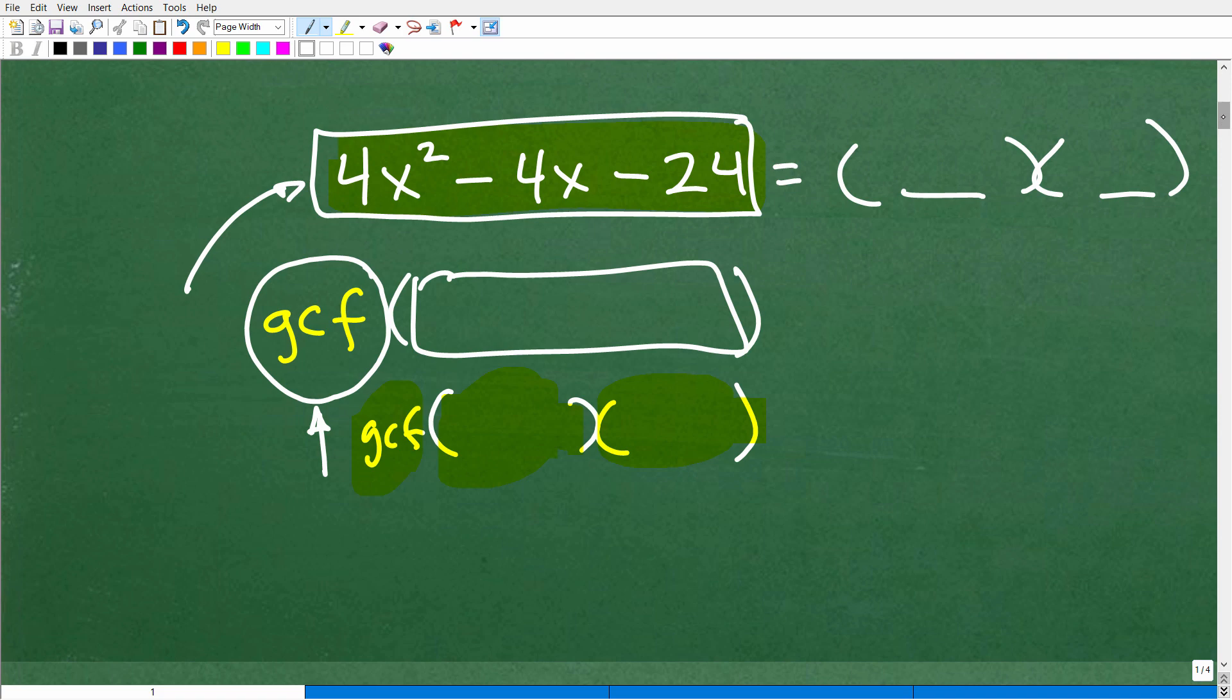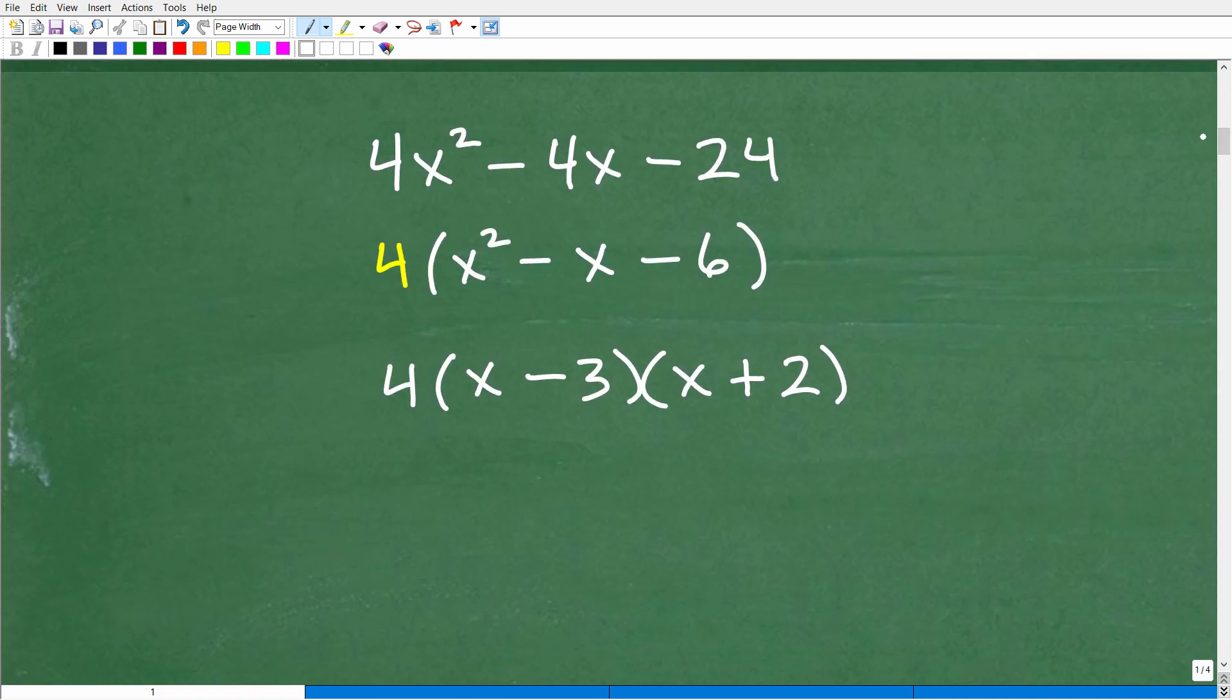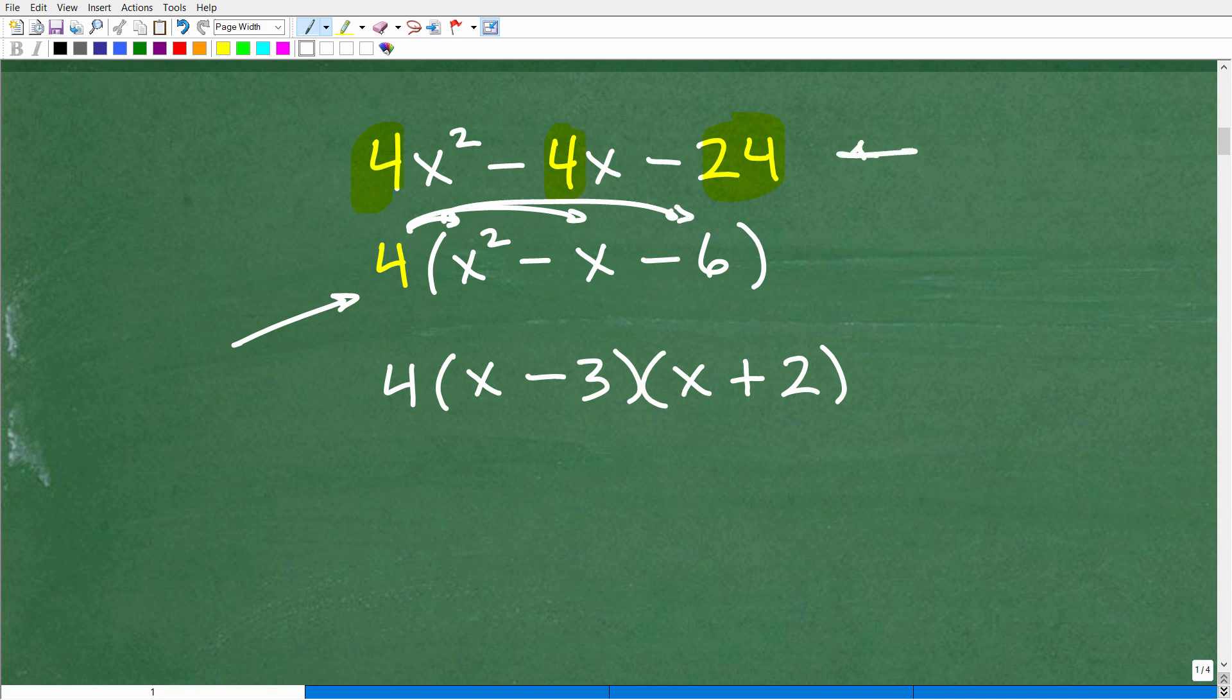Okay, so let's go ahead and finish up this problem. So what is the GCF? Well, the GCF happens to be four. I can factor out a four with all these terms here, right? Hopefully most of you saw that. Four, four, four. Factor out a four because if I use the distributive property back in like this, I'm going to get back to my original problem.